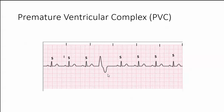Then we have this weird shape in the middle. It has a wide QRS — 0.12 seconds — it's bizarre looking, the T wave is opposite the QRS, and there is no P, therefore no PRI. This is a ventricular rhythm.